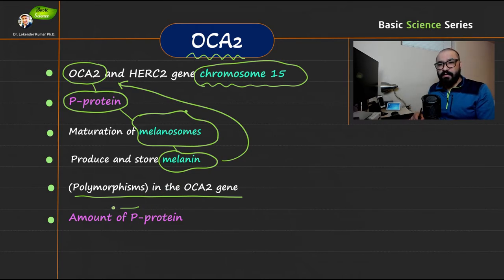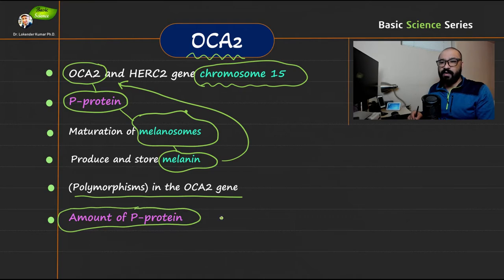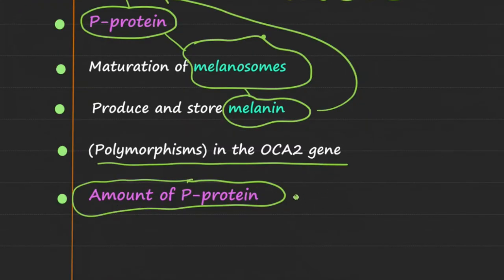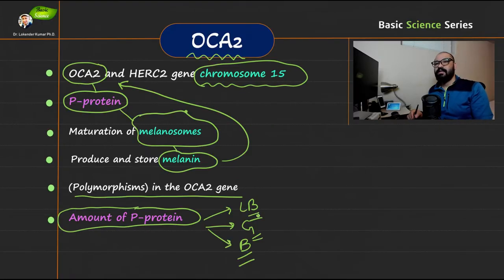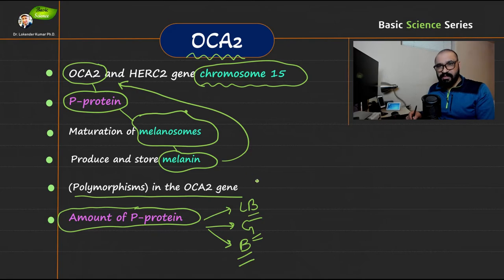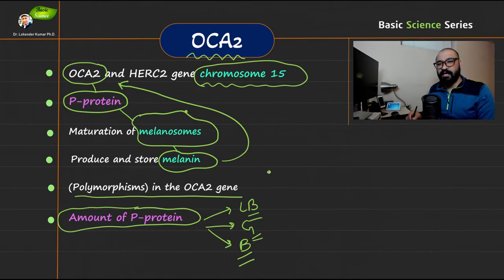The amount of p-protein is directly linked with the different eye colors. In the case of humans, you have light blue, green — most likely light green — and then brown color, and different shades of these colors. This is the role of OCA2 gene in the regulation of human eye color.